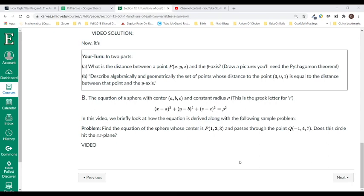The last thing we're hitting in section 12.1 in our survey of functions of just two variables are spheres. This is something you saw in your algebra so it shouldn't be too big of a surprise. What we want to do is just see where the equation comes from and then do a simple example of it. So let's do that.